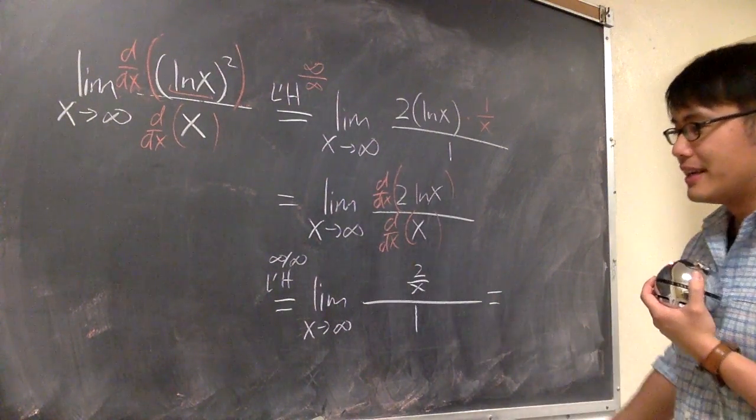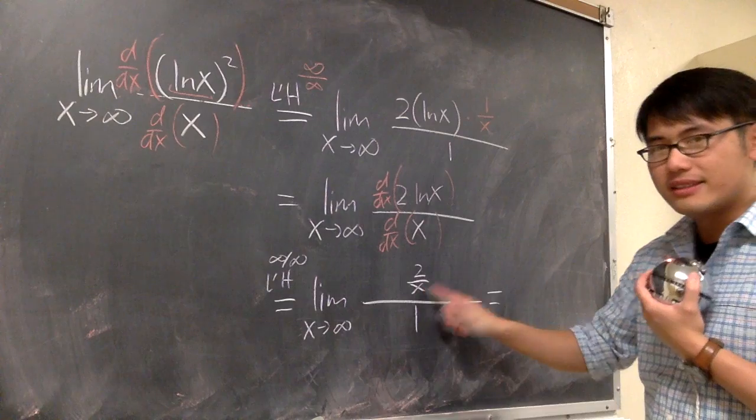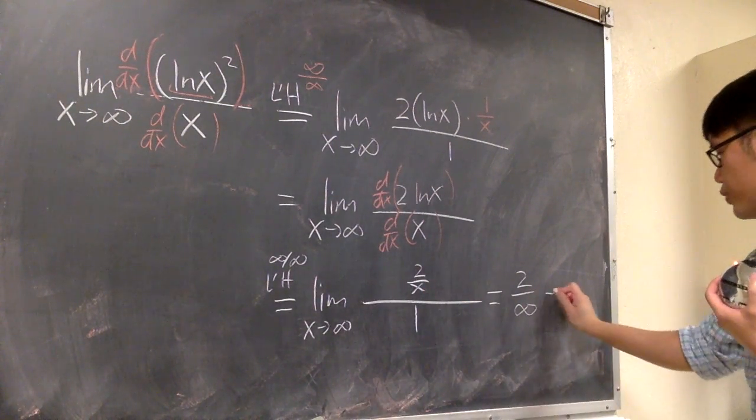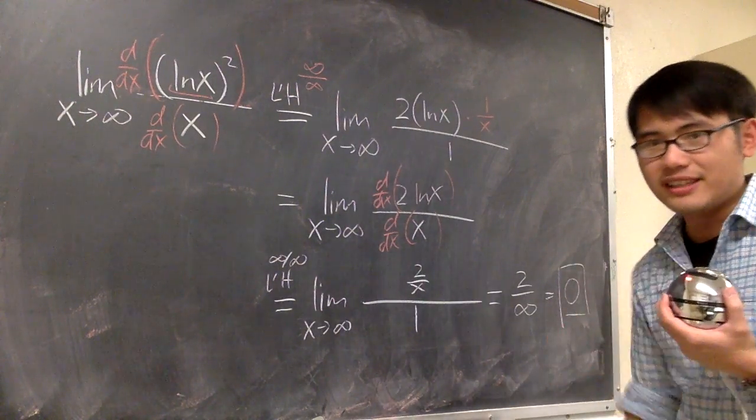And now what? I'm almost done, because I just need to plug in infinity into this x, and we are talking about 2 over infinity, which we can draw a conclusion. This right here has to be 0, and that's the answer. Nothing is at the end. It's okay. There we go. Thank you.